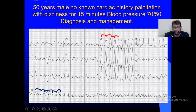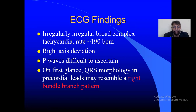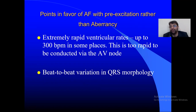It resembles RBBB no doubt, but the morphology is constantly changing — this is a big clue towards the diagnosis. In this ECG: irregularly irregular, broad complex, rate around 190, right axis deviation, and P waves are not present. On first glance QRS morphology may resemble RBBB. You can now consider two possibilities: AF with pre-existing RBBB, or Ashman phenomenon giving a broad complex — but here we have changing QRS morphology.